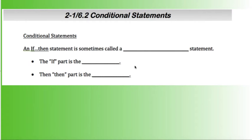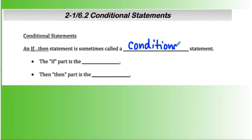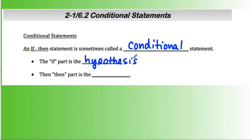Hi, all my geometry students. Today we're going to be talking about conditional statements. A conditional statement is really an if-then statement. The if part of the statement is called the hypothesis, and we consider the hypothesis to be true because we're making a statement. The then part is what we're trying to prove false, and that then part is called the conclusion.